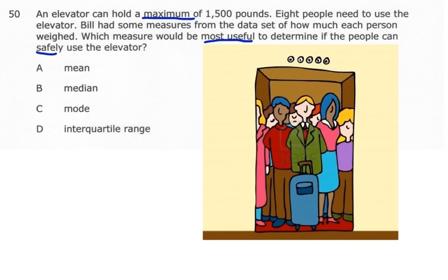So in other words, which one of these choices - mean, median, mode, or interquartile range - would be most helpful to make sure that we don't go over 1,500 pounds? Well, I'm looking at these. I see mean. I know mean means the average.